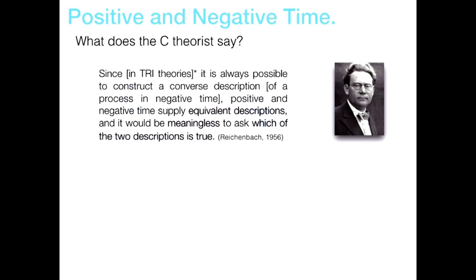Reichenbach, in his book The Direction of Time, says that when dealing with classical mechanics — because we have this feature of time-reversibility — we should say it's always possible to construct a converse description. For any process, if we give a description of it, it's always possible to get a converse description relative to negative time. Because of this, we should think of positive and negative time as supplying equivalent descriptions — really describing the same thing. He says it would be meaningless to ask which of the two descriptions is true. In a reversible system it's meaningless to ask whether M came before O or O came before M.